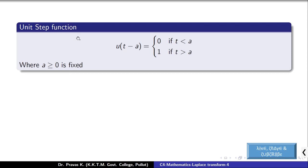The unit step function notation is u of t minus a. Up to some fixed value a, the function value is 0. Afterwards, the value of the function is 1.